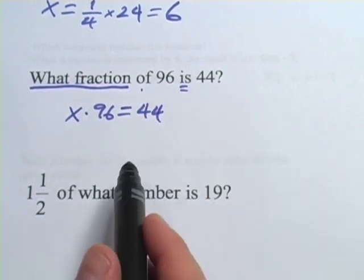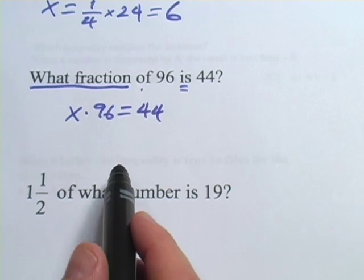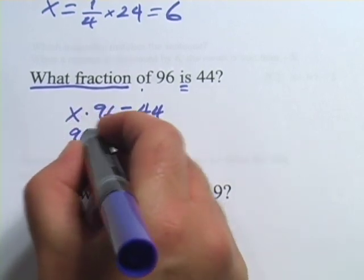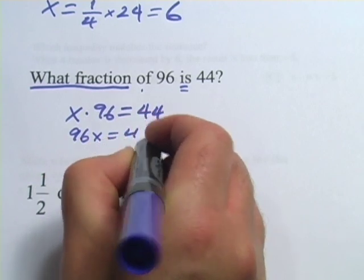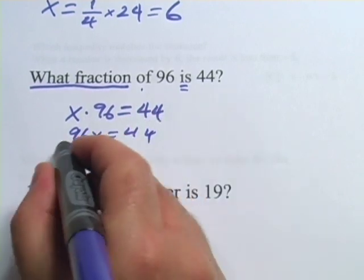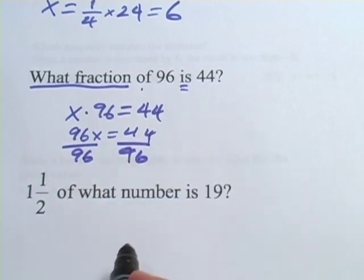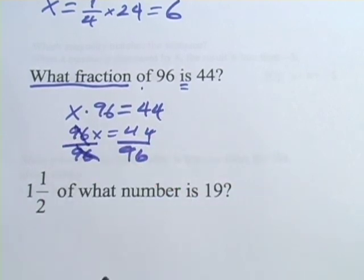Now we've got this in a form that we can use algebra to solve easily. Although usually instead of writing X times 96, we would write 96X—it's the same thing. To solve for X we would simply divide by 96, and then these 96s cancel. Of course, X equals 44/96, although it's clear you can take a four out of each of those.